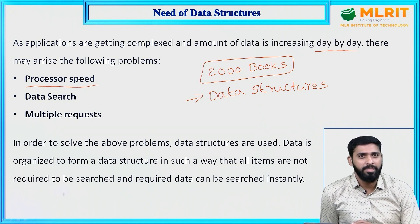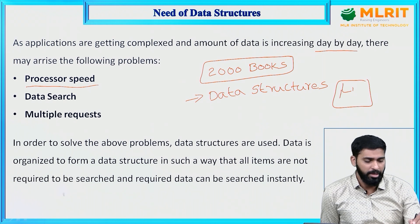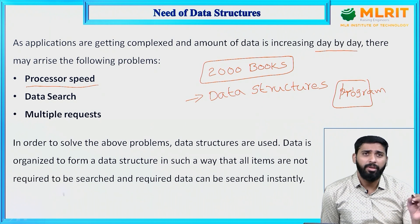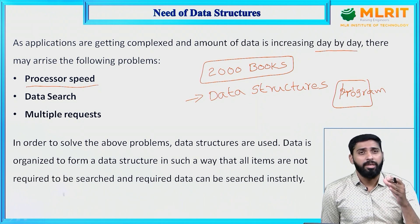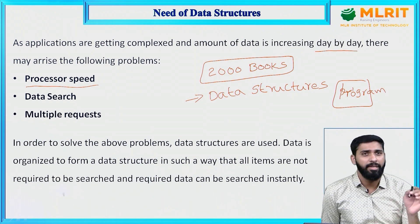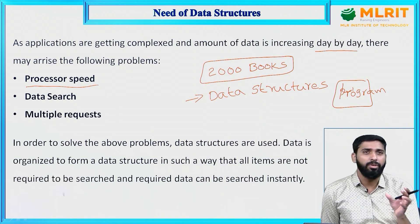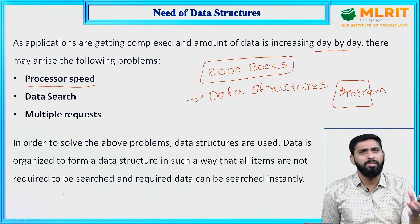In a library management system, we write a program to retrieve the data. The processor will execute this program, but there are huge numbers of books to search. To process the data, it takes much time. That means we need to either increase the processor speed or organize the data in an efficient manner so that we can retrieve the data quickly.